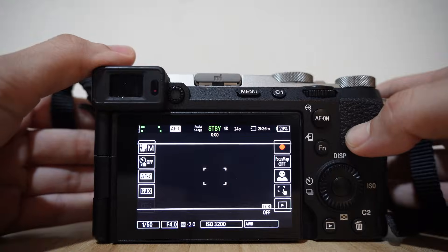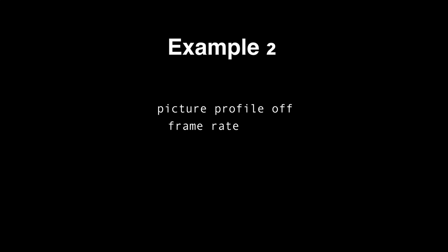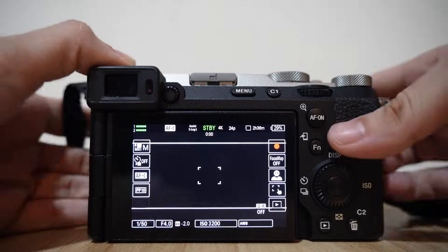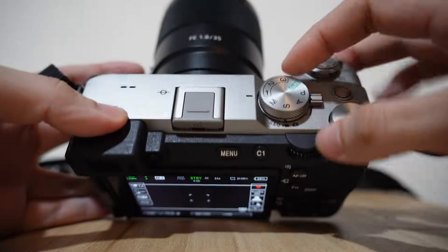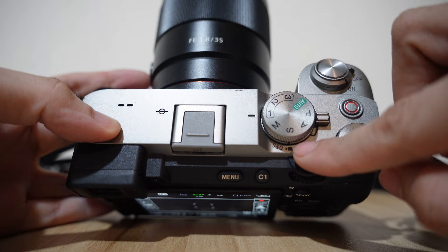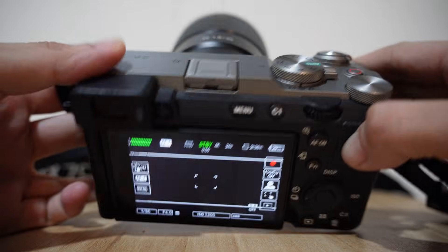I will show you another example. This time I want to set dial number 2 as a slow motion effect. Again, I am in movie mode, using manual exposure, and picture profile is off.